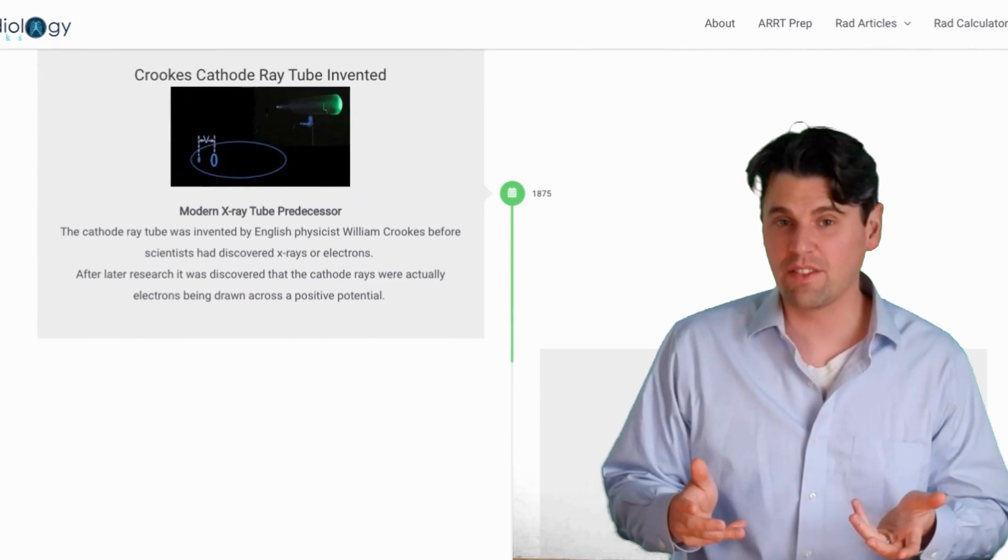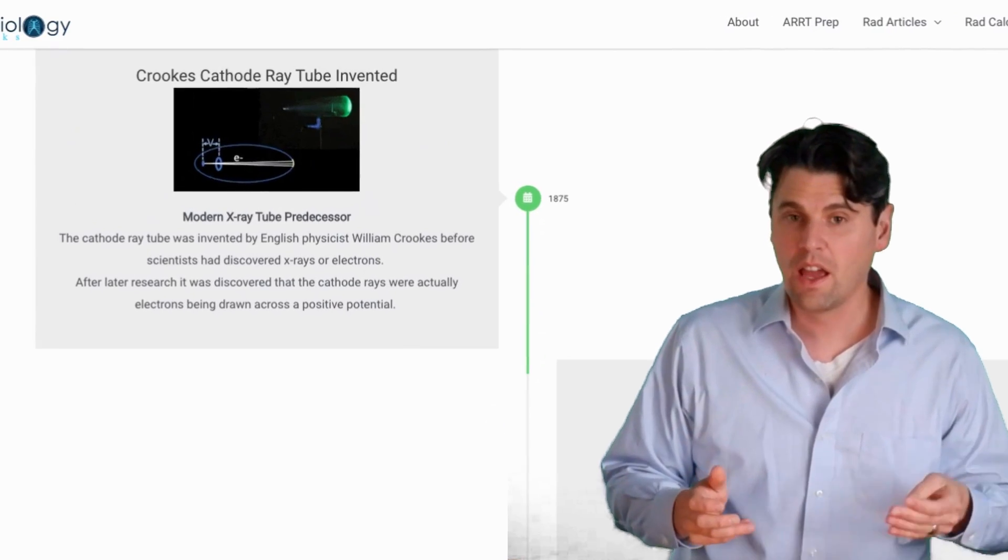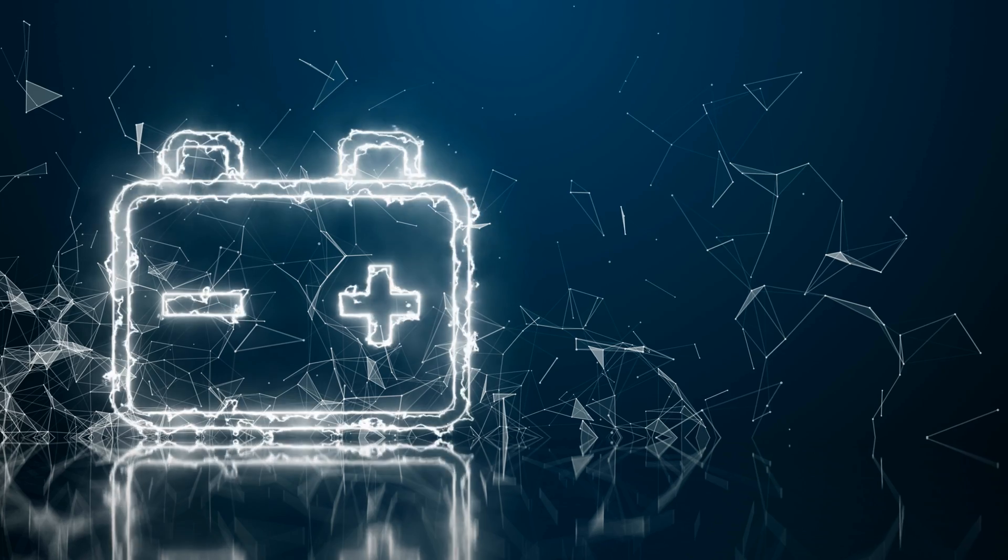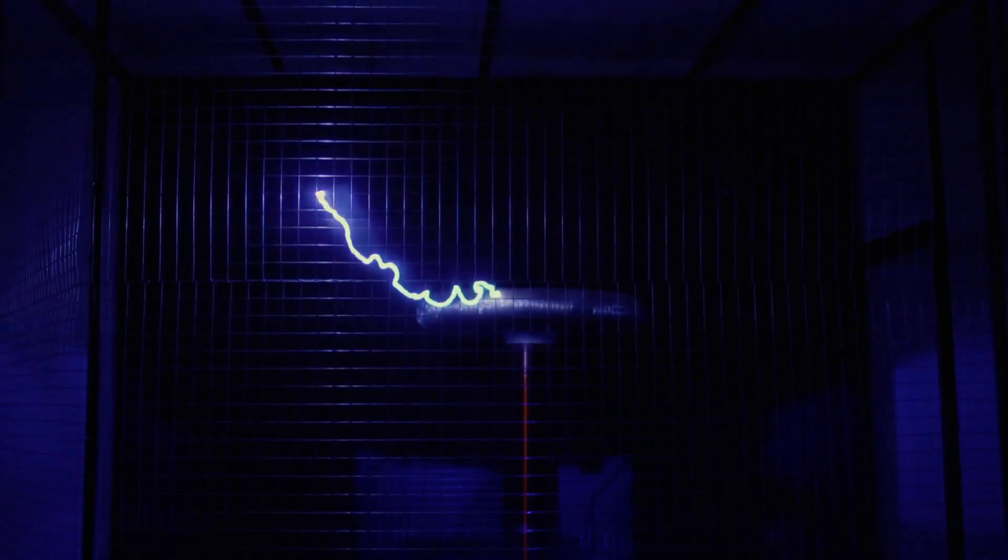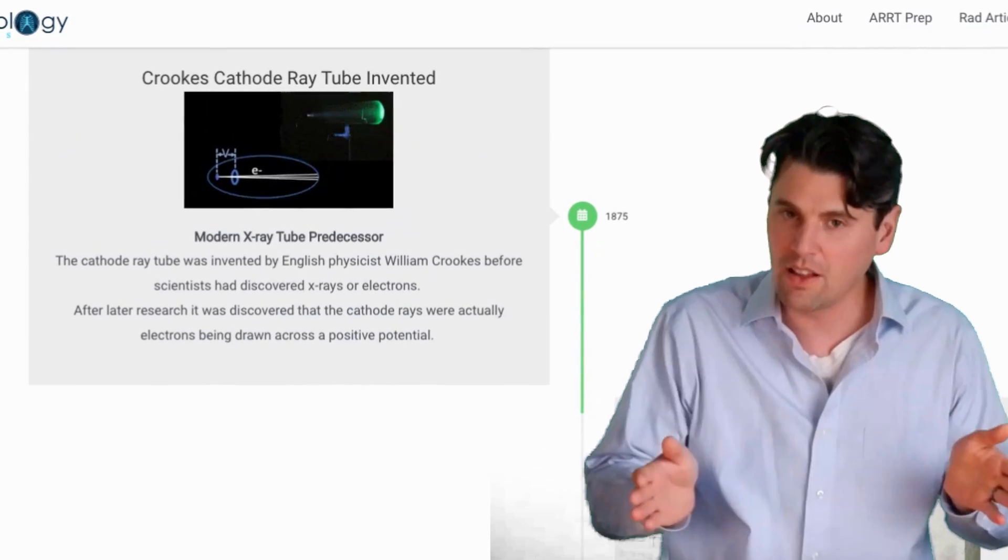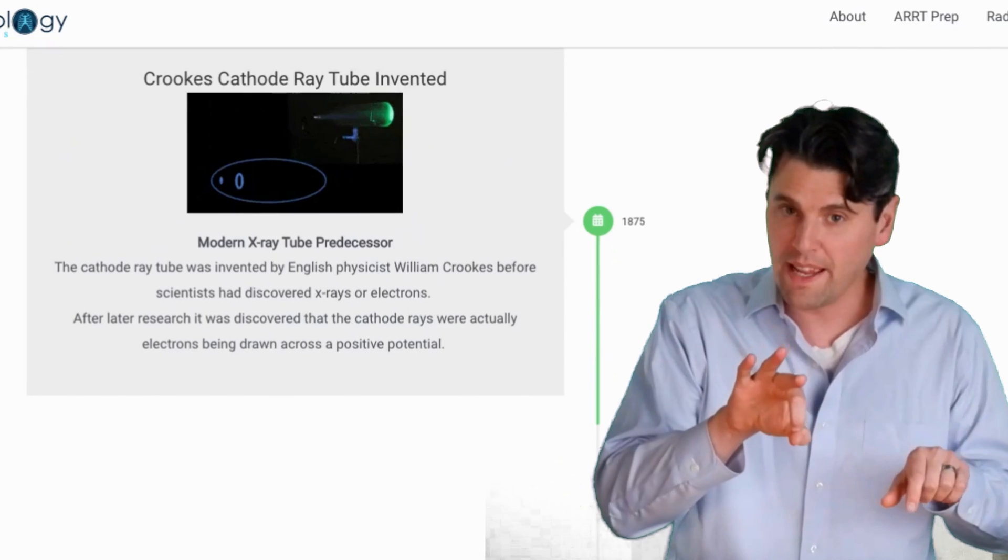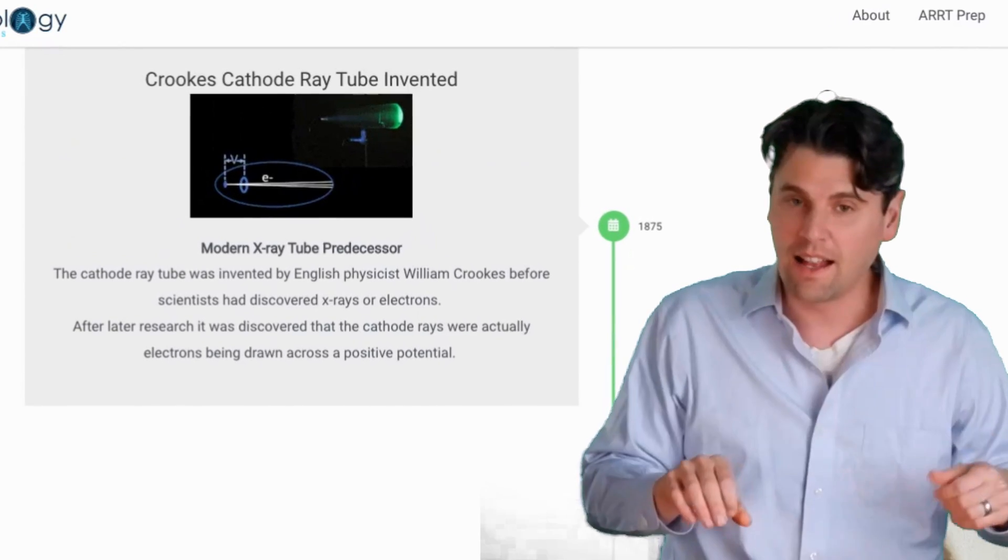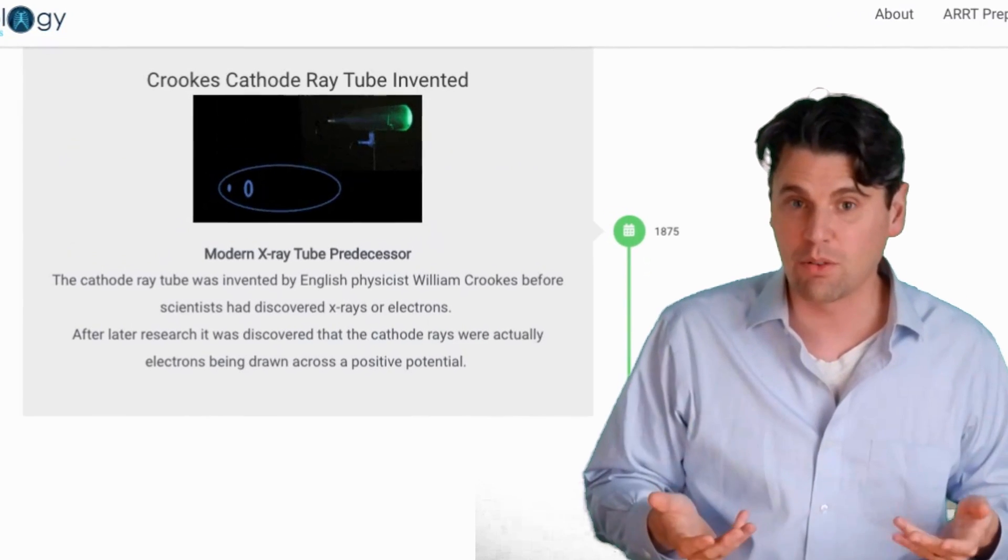In 1875, the cathode ray tube was invented by Crookes. In this case, a potential is used to draw electrons—they didn't know yet at the time that's what they were—but to draw the electrons through a ring essentially, and onto the other side of the cathode ray tube.